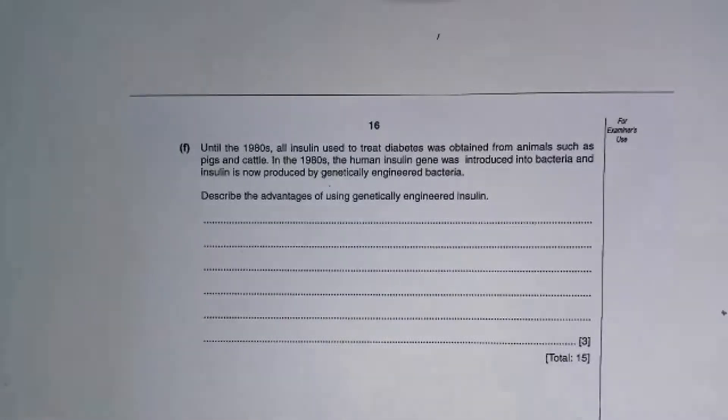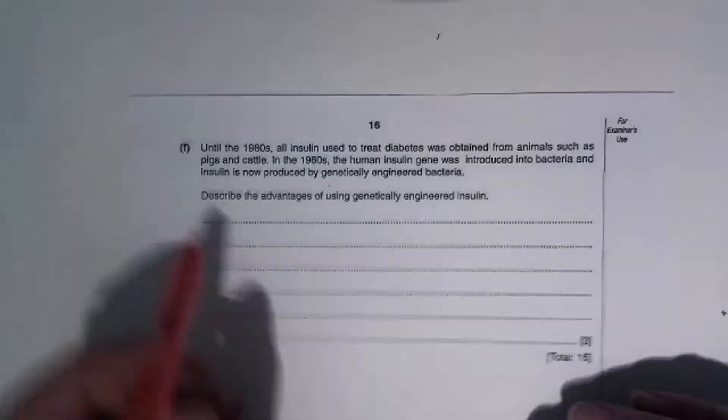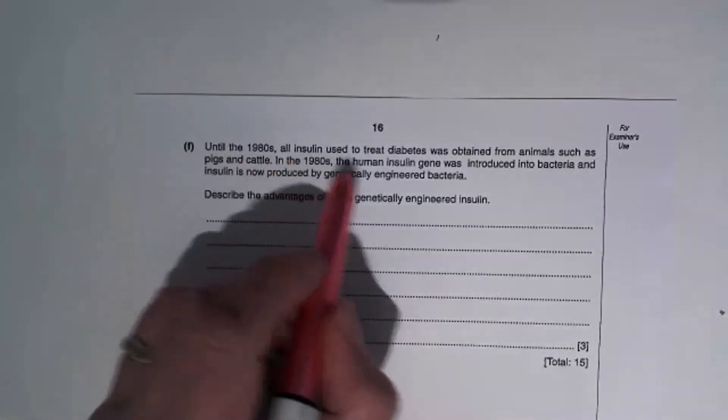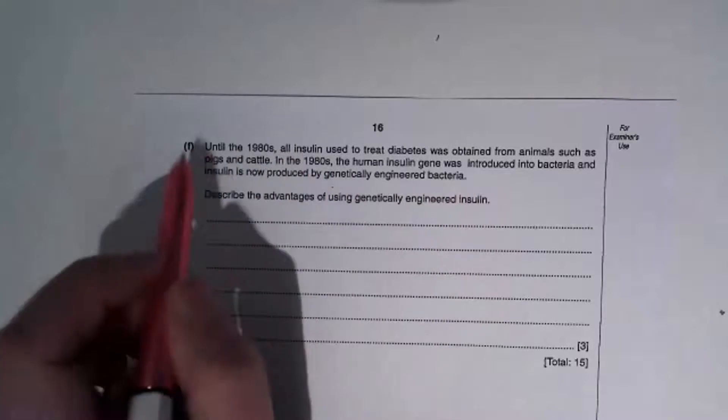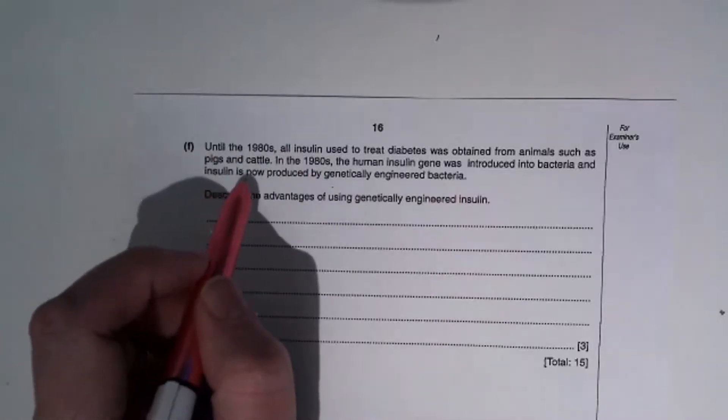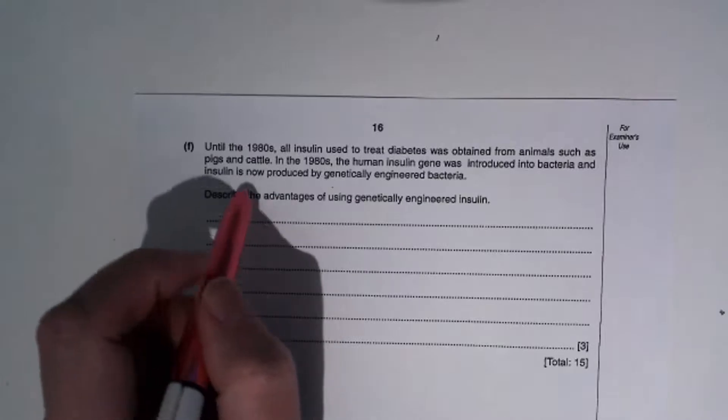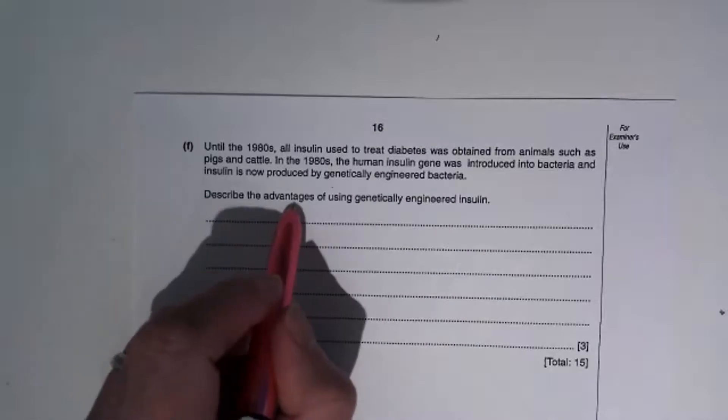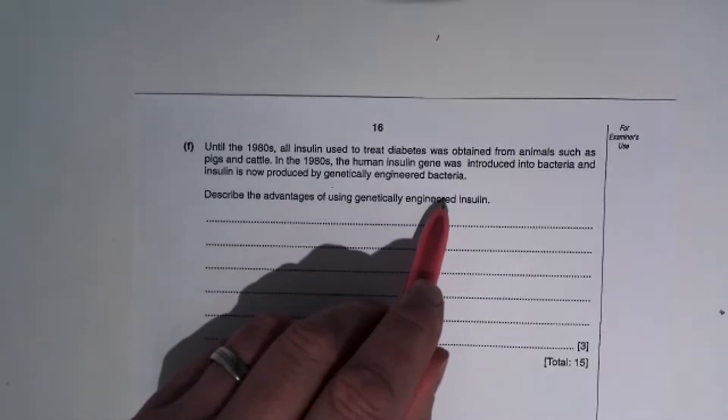This is a question about the advantages of genetically engineered insulin. Until the 1980s, all insulin used to treat diabetes was obtained from animals such as pigs and cattle. In the 1980s, the human insulin gene was introduced into bacteria, and insulin is now produced by genetically engineered bacteria. Describe the advantages of using genetically engineered insulin.